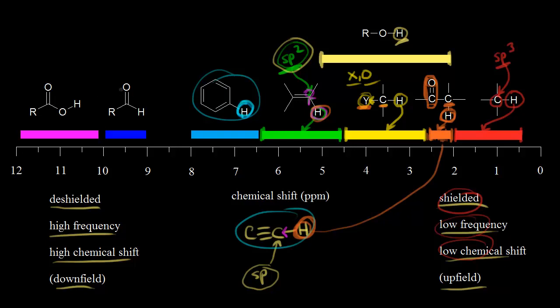Moving on to an aldehyde: we have a carbonyl where the oxygen is withdrawing electron density away from the proton on the aldehyde, deshielding it, so we'd expect that signal at a higher chemical shift — somewhere around 9 to 10 parts per million. Finally, for a carboxylic acid, the signal for that proton is approximately 10 to 12 parts per million. Here we have the carbonyl withdrawing electron density, another oxygen withdrawing electron density, plus electronegativity effects, resonance effects, and hydrogen bonding effects. If you see a signal in the 10 to 12 region, think: proton on a carboxylic acid.